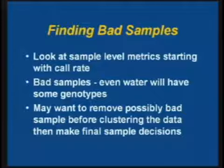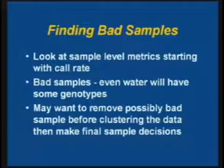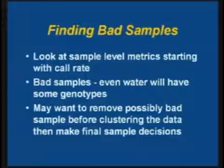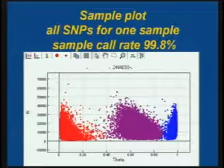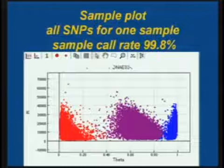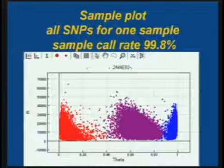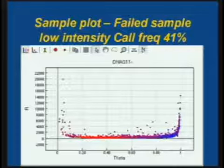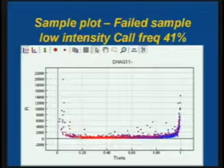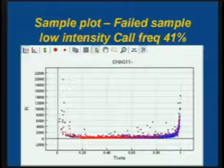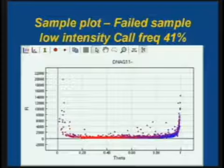Finding bad samples: you want to do the same kind of thing — look at sample-level metrics, starting with call rate. Bad samples have genotypes; even water has genotypes. You may want to remove some of the bad samples before clustering, because they can draw the clusters in odd directions. This is another way of looking at the data — Illumina calls it a sample plot. It shows all SNPs across the array for one sample: here are the homozygotes, the heterozygotes, and the other group of homozygotes. You want to see at least some semblance of three clusters. This is a sample that failed utterly — there's almost no intensity and no clustering. It had a call frequency of 41 percent. You don't want to be analyzing those genotypes — they're just meaningless.